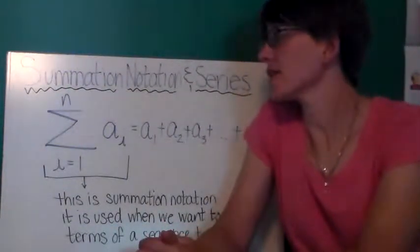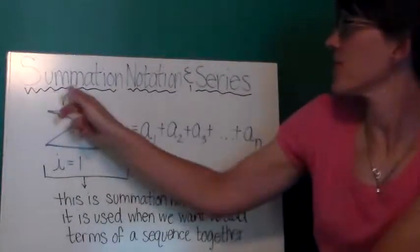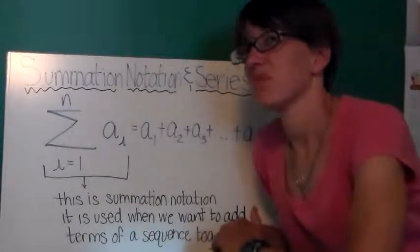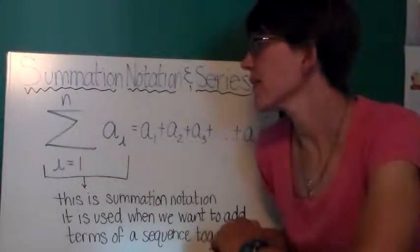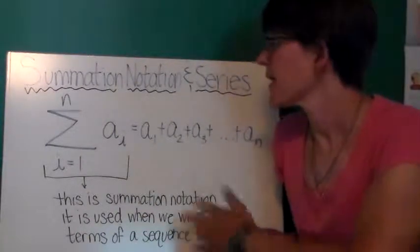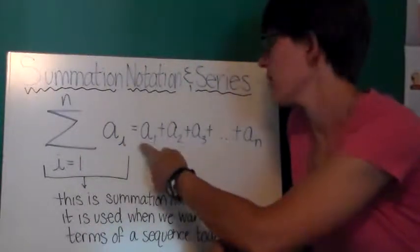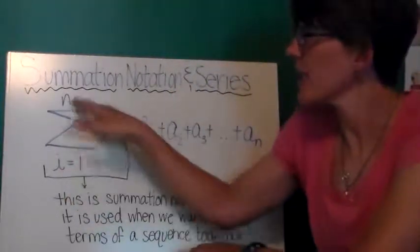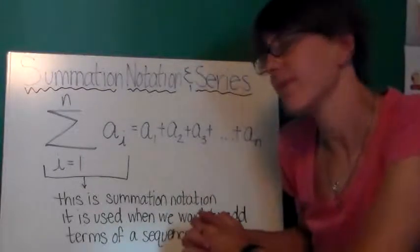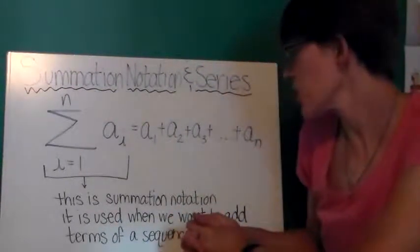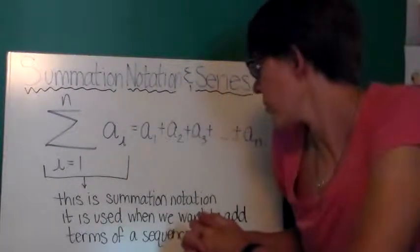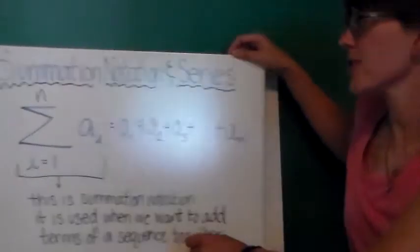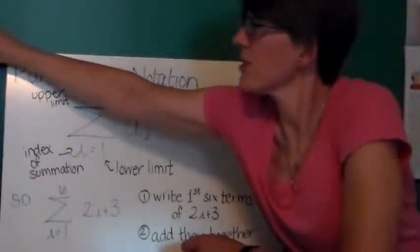Hi, this is Mrs. Offden and today we're going to be talking about summation notation and series. You can see I have what looks kind of like a weird letter E here and this is followed by a big long addition statement. It has some letters and numbers underneath and a variable on the top. This is something called summation notation. It's used when we want to add terms of a sequence together. So let's first learn what this summation notation means.